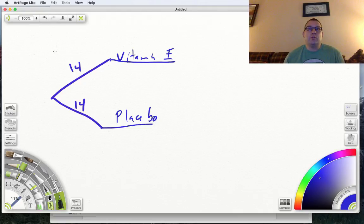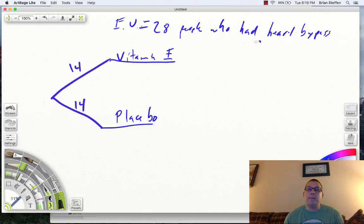All right, so my experimental units are the 28 people who had heart bypass surgery. Those are my experimental units, okay? That's these people over here, my experimental units.